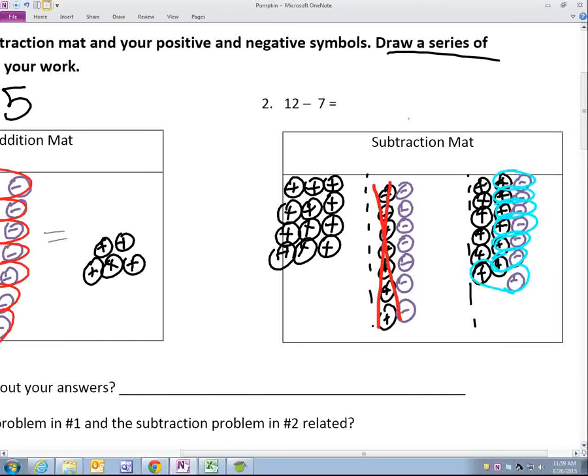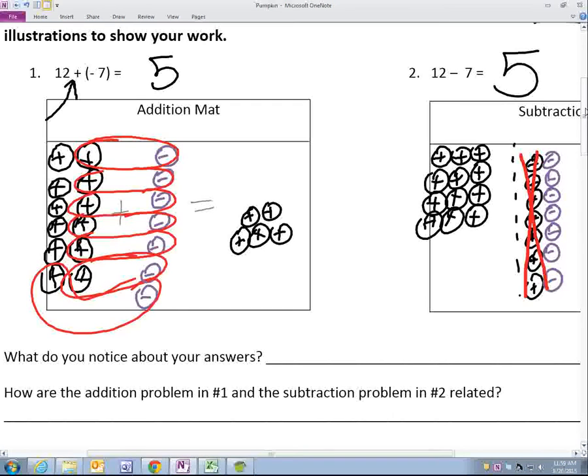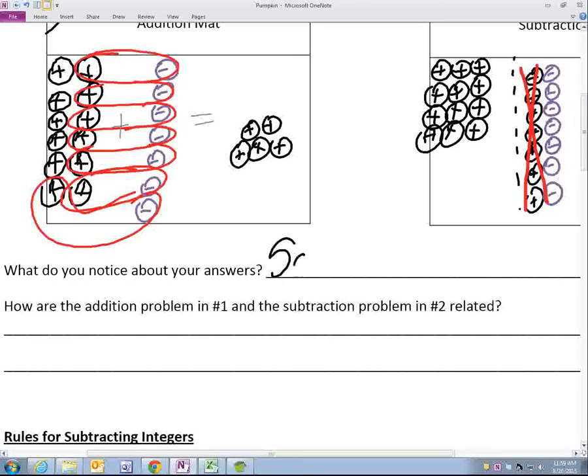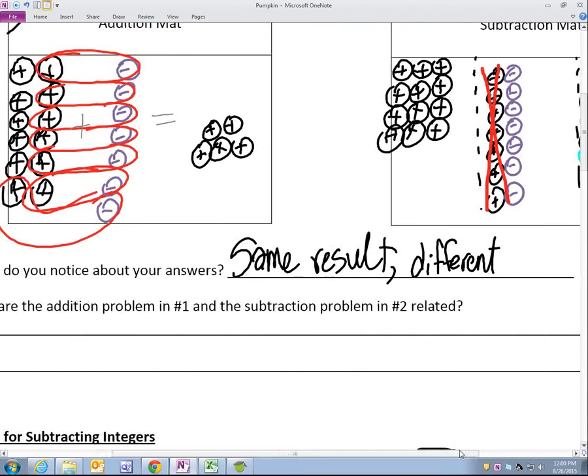Five. So what do you notice about those two responses? It's the same answer. So, same result. What else did somebody notice? Same result, but different ways of getting there. Different ways of getting there. Same result? How about, same result, different signs. Or different signs in problem. Different signs in problem.